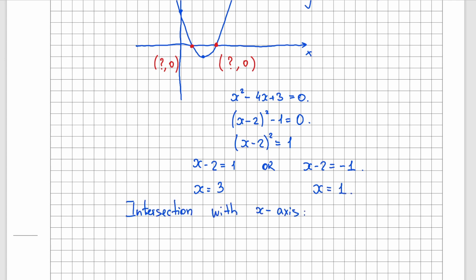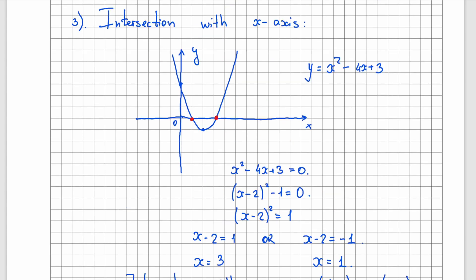And here are the two points of intersection with the x-axis. It's 1, 0 or 3, 0. And that is how our graph looks like with all the key points indicated. Intersection with y-axis, intersection with x-axis, and vertex.